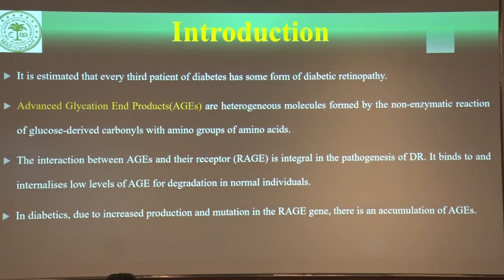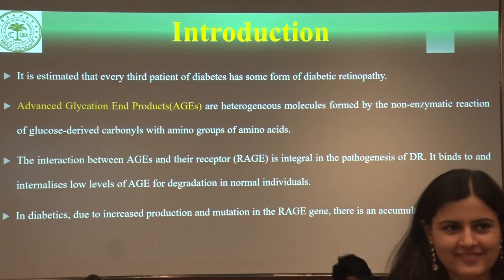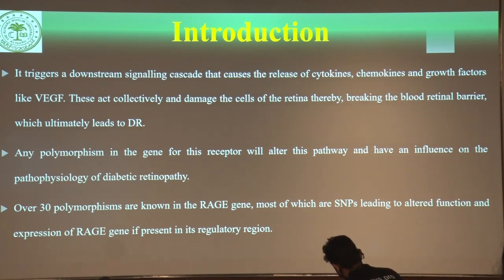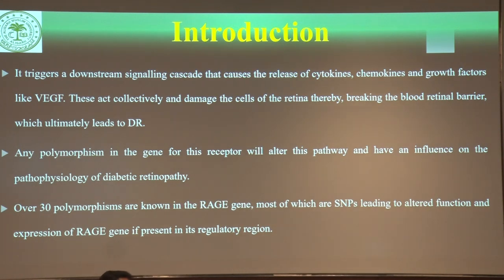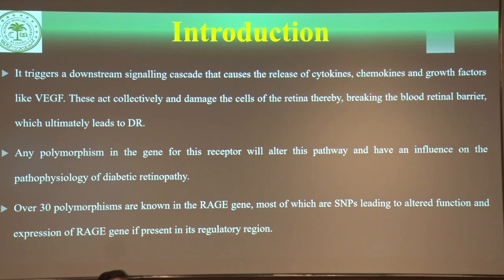Accumulation of AGEs leads to downstream signaling releasing cytokines, chemokines, and growth factors like VEGF, collectively damaging retinal cells and causing diabetic retinopathy. Any polymorphism in RAGE influences the pathway and the pathophysiology of diabetic retinopathy. Over 30 polymorphisms have been documented in the RAGE gene, most being single nucleotide polymorphisms causing altered function and expression, especially in the regulatory region. Intracellular hyperglycemia triggers release of interleukins, chemokines, and cytokines, causing alteration of the blood-retinal barrier and retinal ischemia through thrombosis and microaneurysms, increasing vascular permeability and ultimately leading to macular edema, hemorrhage, and retinal detachment.